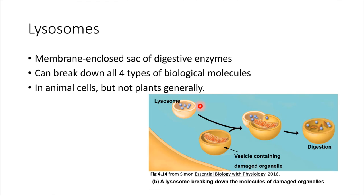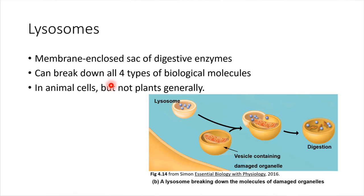Lysosomes at a glance look like vesicles, but there's something special about them. Lysosomes are little packages that contain digestive enzymes specifically. They do a very important job in cells — they are responsible for recycling things that are no longer working correctly. If there's an organelle that's been working for a long time and is starting to get worn out, a lysosome will come over, digest it, and recycle its components, helping to clean up the internal environment of the cell. Lysosomes are capable of breaking down all four types of biological molecules. Generally these are found in animal cells but not plant cells, which is one difference between those two cell types.